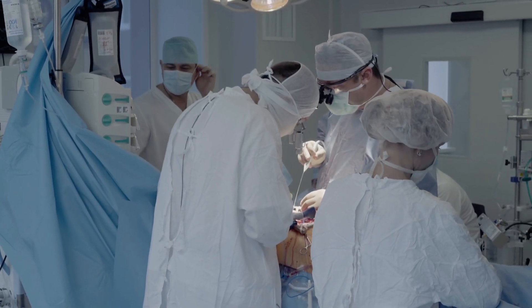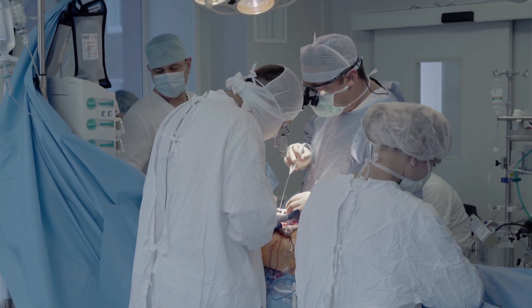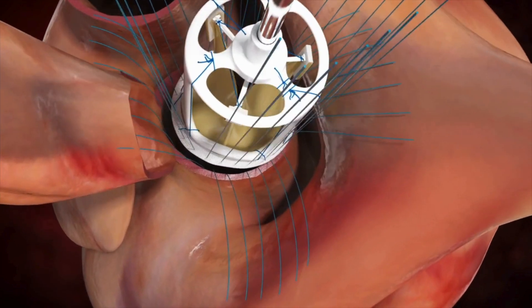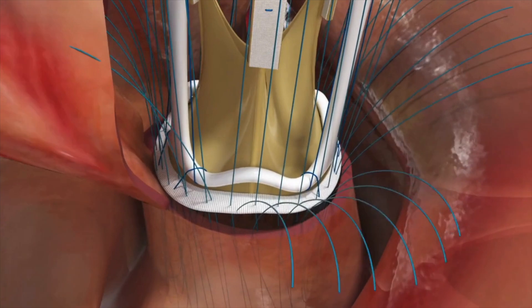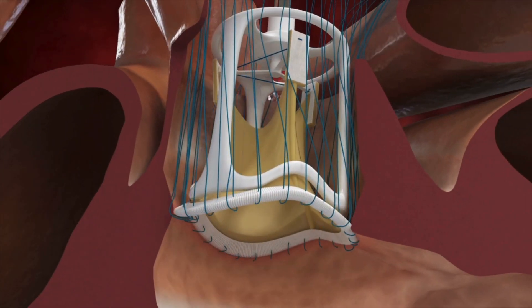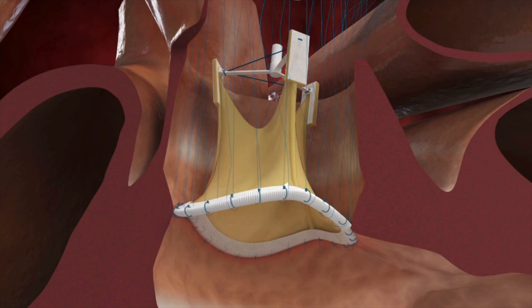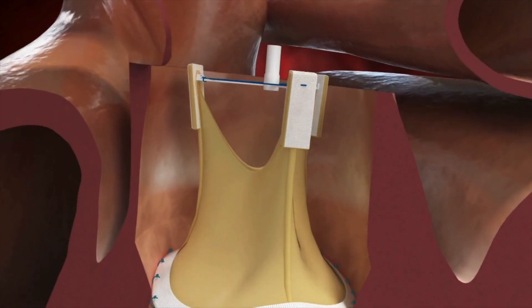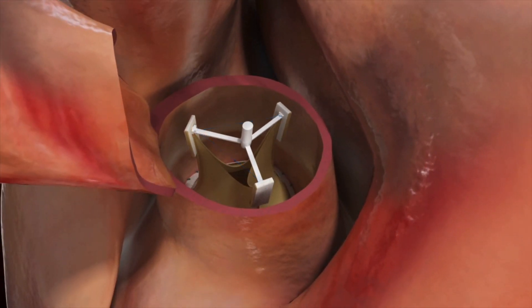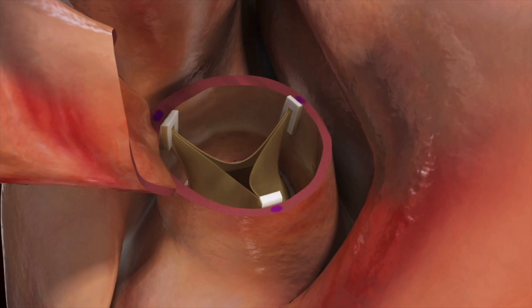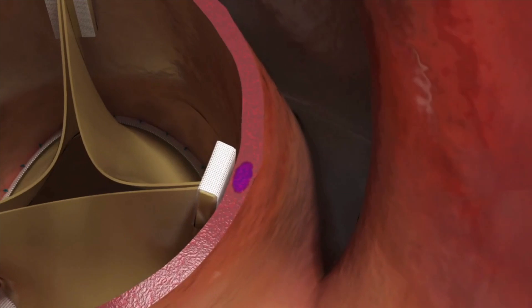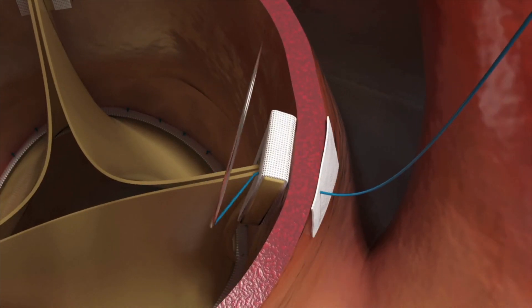Traditionally the treatment for aortic valve stenosis is surgery — an open heart operation whereby a surgeon removes the old valve and puts a new one in. That valve is typically a tissue valve made of pig or cow tissue, but other options include metal stainless steel valves. These prosthetic valves replace the existing valve that has become narrowed.